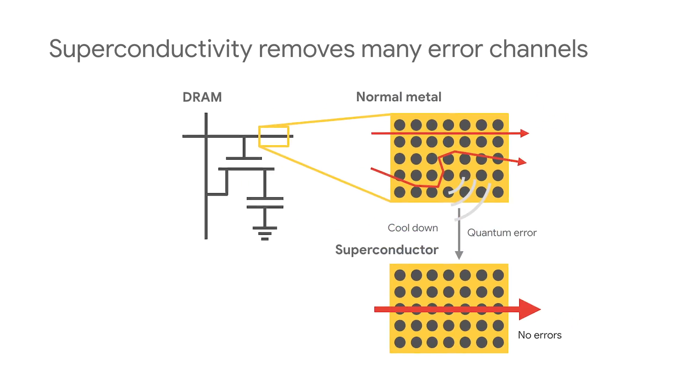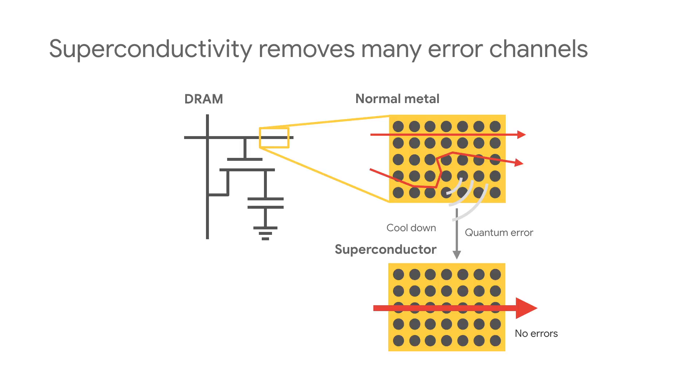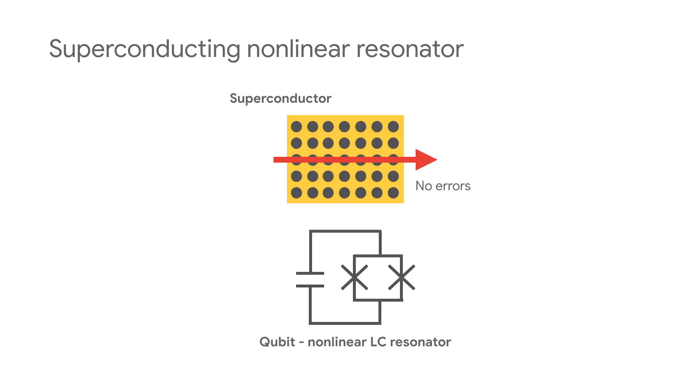However, when certain metals are cooled down, their electrons join together in a single unit. The individual electrons no longer scatter, and the rate of quantum errors drops to almost zero.